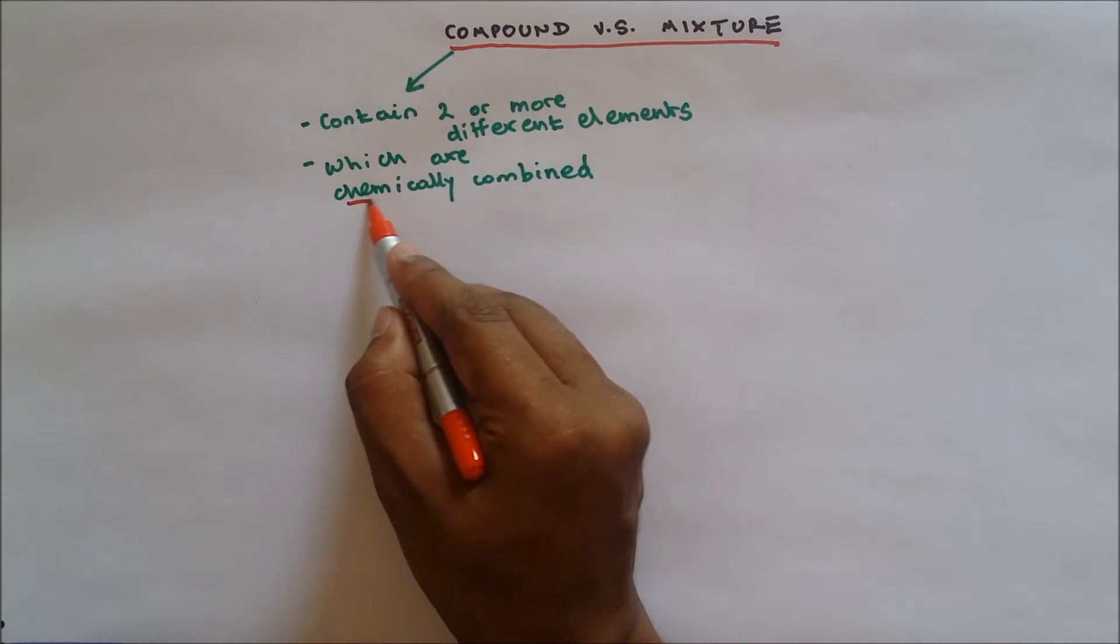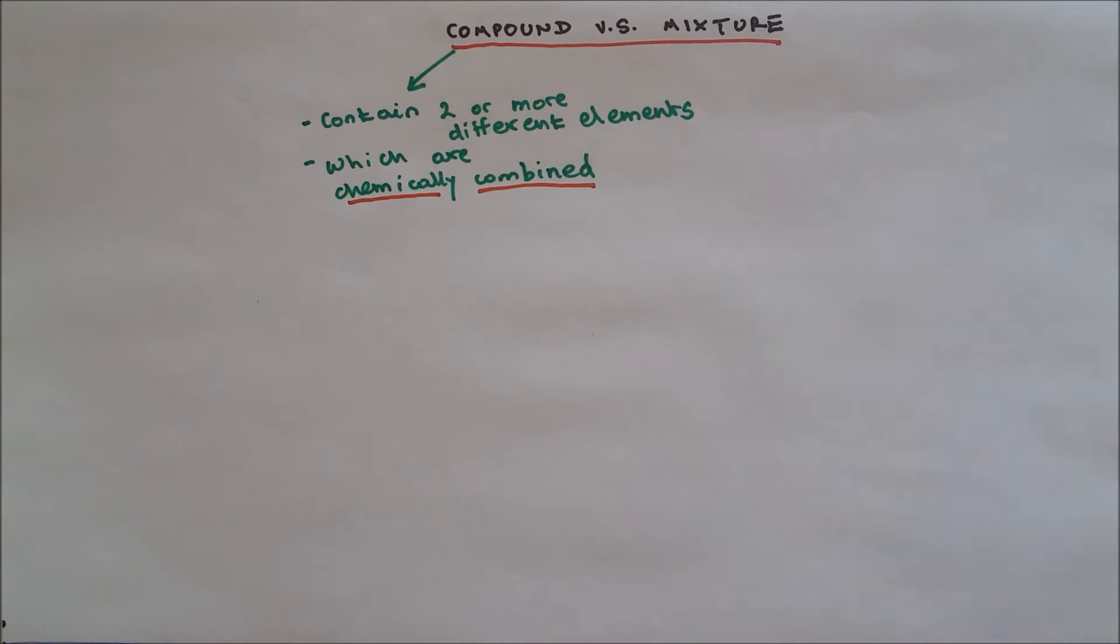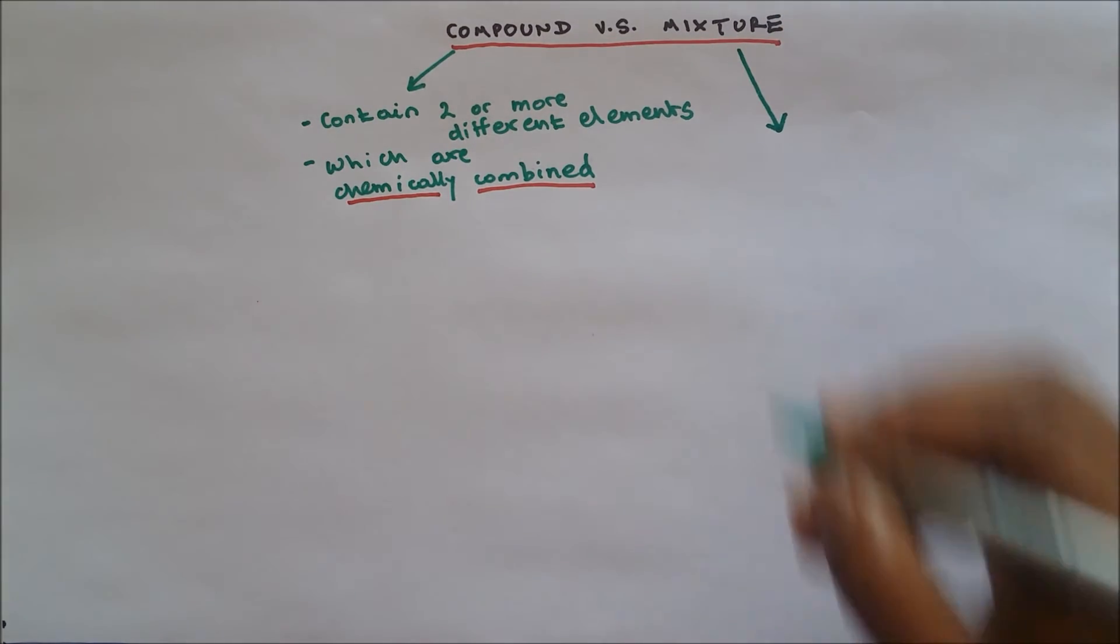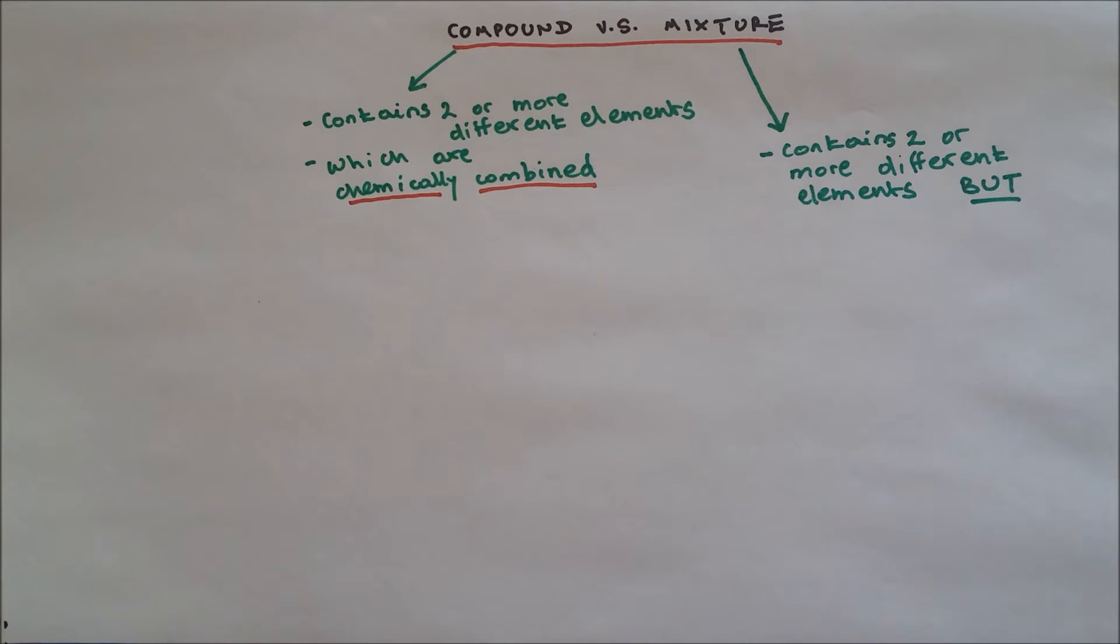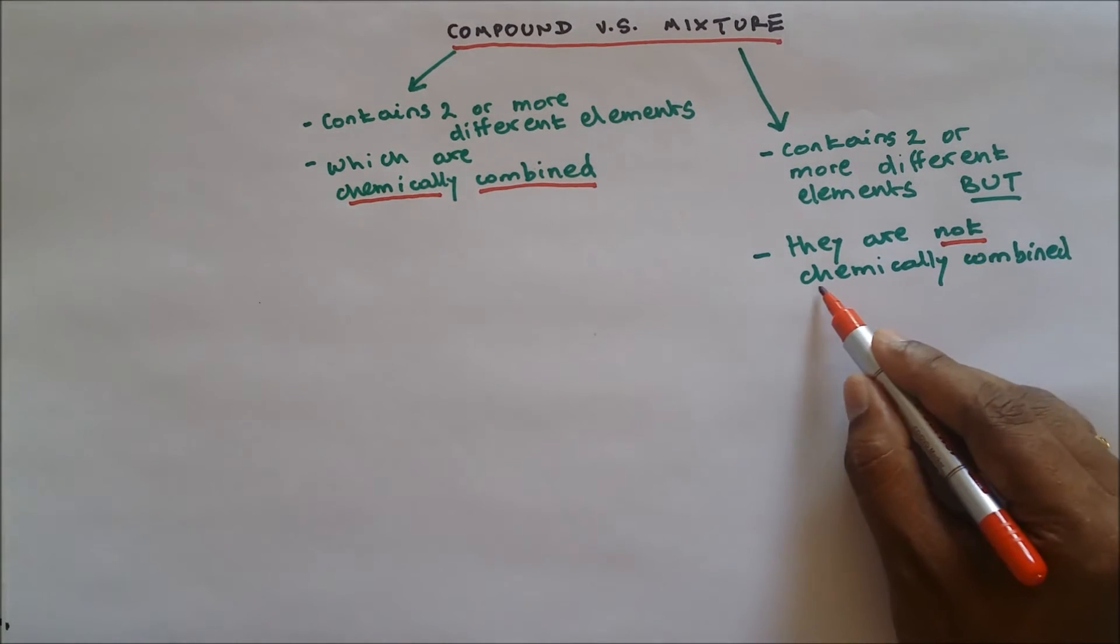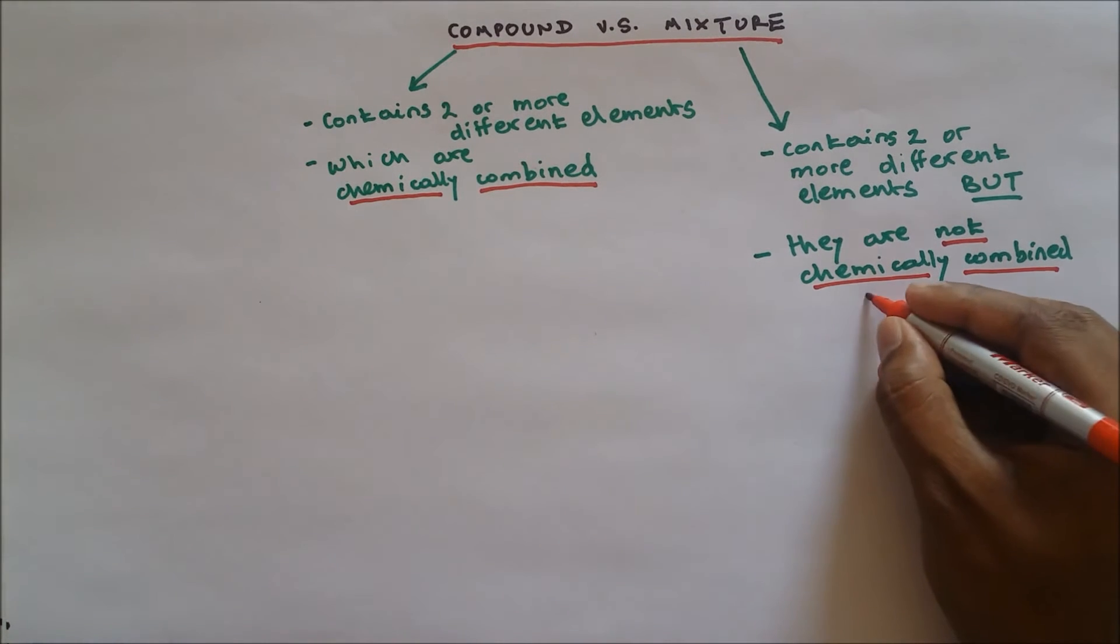What is a mixture? Mixture contains two or more different elements, but they are not chemically combined. So the words 'not chemically combined' are important, which means there is no bond.